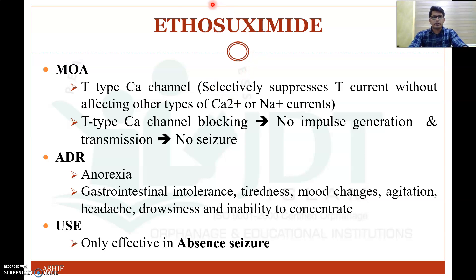The next class of anti-epileptic drug is ethosuximide. The mechanism of action of ethosuximide is that this drug acts at the T-type calcium channel. By acting at the T-type calcium channel, it will block the calcium channel, so there will not be any impulse generation and transmission, and therefore no seizure. That is the mechanism of action of ethosuximide.